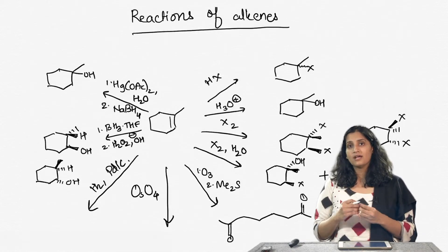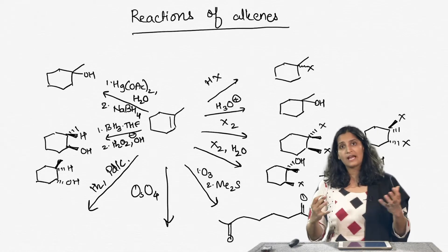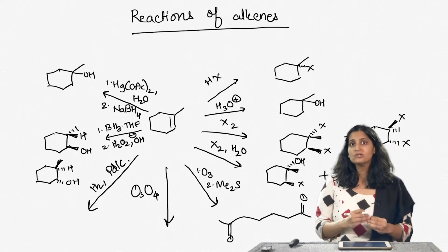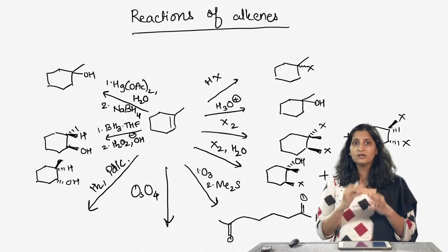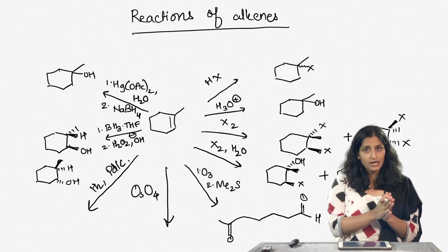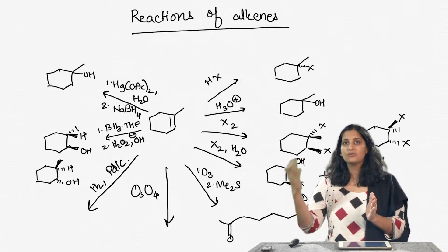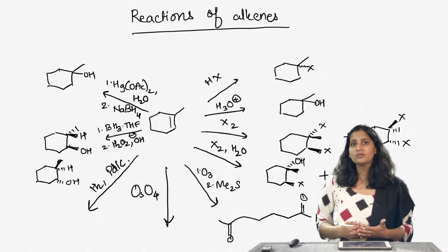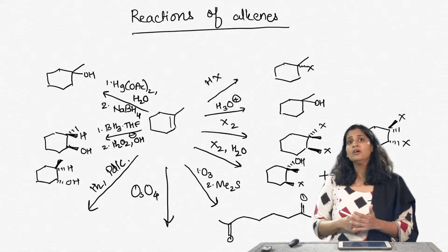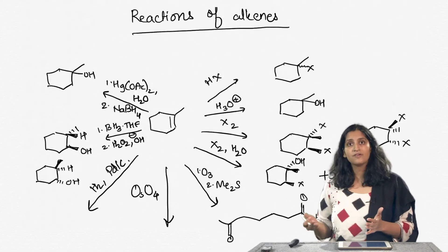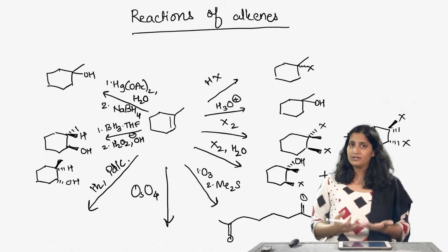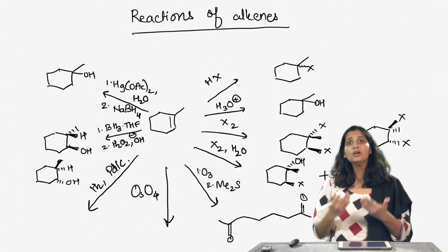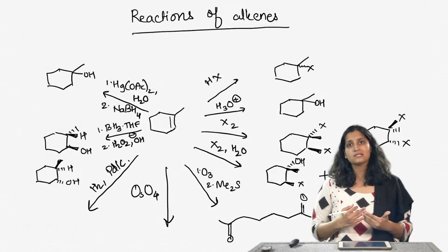One of the reasons chemists like to know so many reactions and have so many tools at hand is because each tool is used to convert the functional group at hand — in this case an alkene — to the functional group needed: alcohols (via hydroboration or oxymercuration), alkanes (via hydrogenation), or aldehydes and ketones (via ozonolysis).